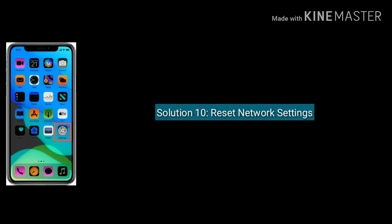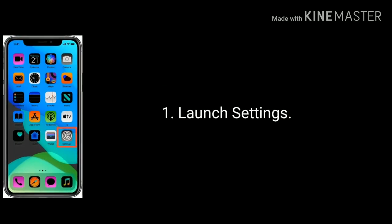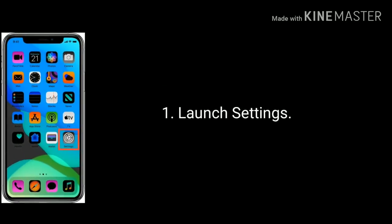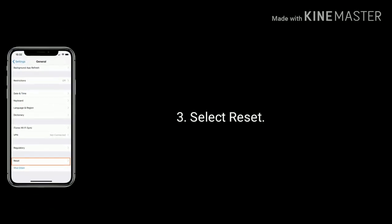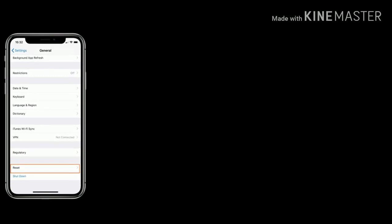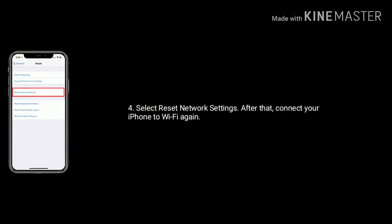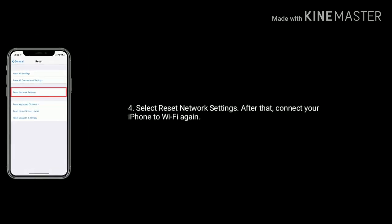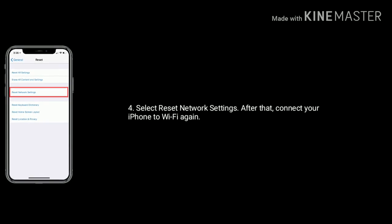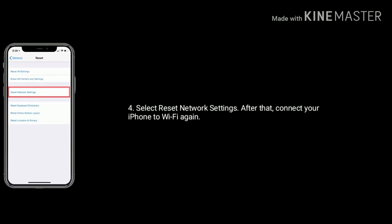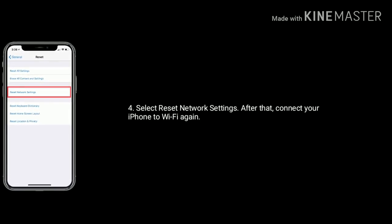Solution 10 is reset network settings. Launch Settings on your iPhone, tap on General, select Reset, then select reset network settings and enter your passcode. Tap reset network settings again to confirm. After that, connect your iPhone to Wi-Fi again.